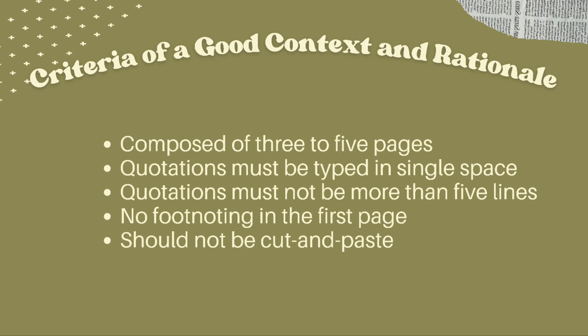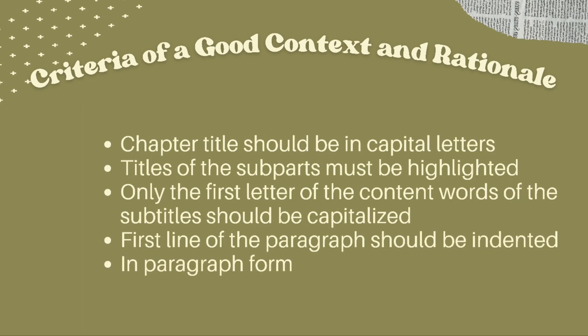Here are the criteria in writing the context and rationale or background of the study. It must be composed of three to five pages. Quotations must be typed in single space and must not be more than five lines. There should be no footnoting on the first page. It should not be cut and pasted. The chapter titles should be in capital letters, and the titles of the subparts must be highlighted. Only the first letter of the content words of the subtitles should be capitalized. The first line of the paragraph should be indented, and it must be in paragraph form.